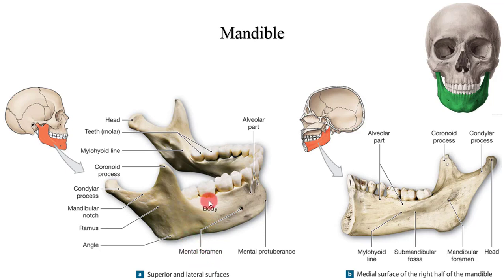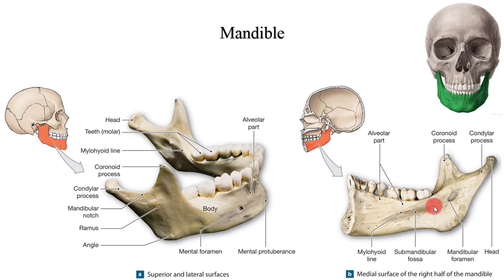The alveolar part of the mandible is a thickened area that contains the alveoli and the roots of the teeth. On the medial wall of each ramus, you can see the mylohyoid line. At the mylohyoid line, the mylohyoid muscle inserts to support the tongue and the floor of the mouth. At the posterior superior end of each mylohyoid line, a prominent mandibular foramen provides a passageway for blood vessels and nerves that innervate the inferior teeth.